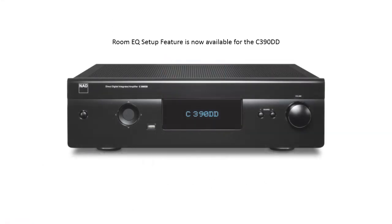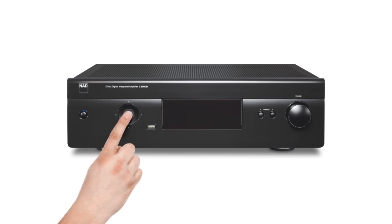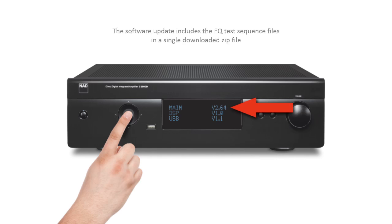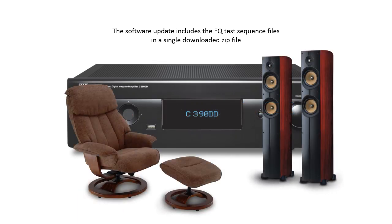A Room EQ setup feature is now available for the NAD C390DD direct digital amplifier. The operating system software version required is 2.64 or higher. To check the installed version, with the unit turned on, press and hold the center button on the front panel for 5 seconds until the software version appears on the display. If the version is lower than 2.64, the updated software needs to be installed. You will also need the room EQ test sequence files to initiate the room EQ setup and make corresponding level adjustments to optimize the C390DD for a specific listening room and speakers. The test sequence is downloaded to a USB jump drive and inserted into the front USB port of the 390DD to perform the calibration process.